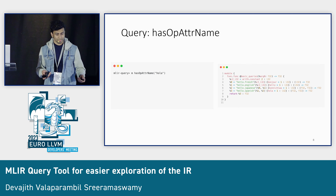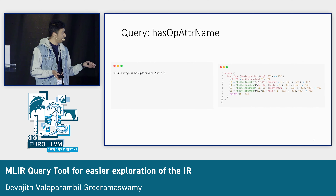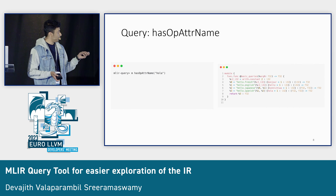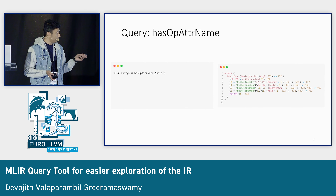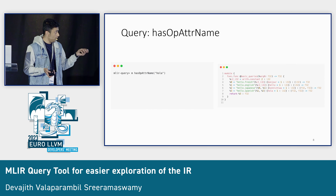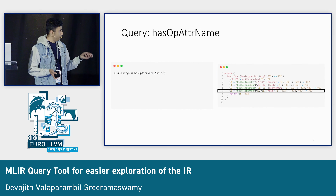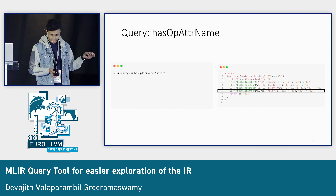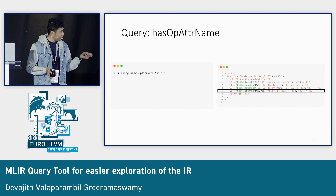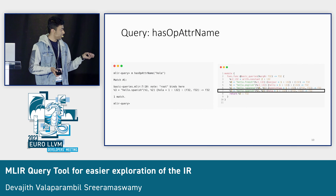You can do the same thing for attribute names. Let's say we want to find all the operations that have an attribute name 'hola'. We all know it should match hello.spanish, which is on line 7. And MLIR Query gets it right.